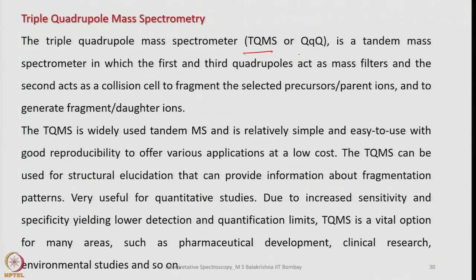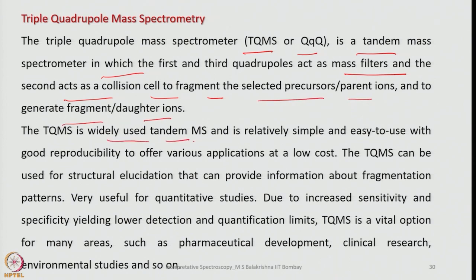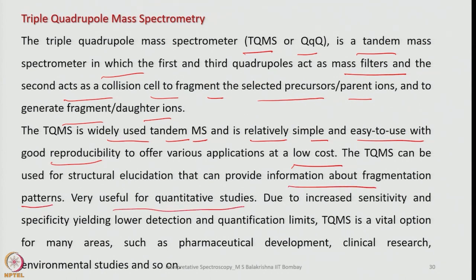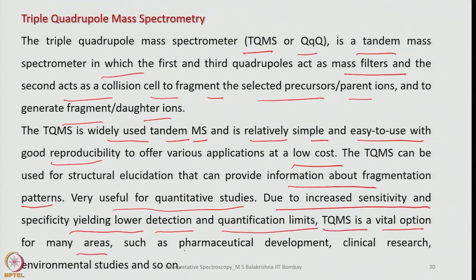Another instrument is triple quadrupole mass spectrometry, abbreviated as TQMS or QqQ. It is a tandem mass spectrometer in which the first and third quadrupoles act as mass filters and the second acts as a collision cell to fragment selected precursor or parent ions and generate fragment or daughter ions. TQMS is widely used, relatively simple and easy to use, with good reproducibility at very low cost. It can be used for structural elucidation and fragmentation pattern analysis, as well as quantitative studies, with lower detection and quantification limits — vital for pharmaceutical development, clinical research, and environmental studies.